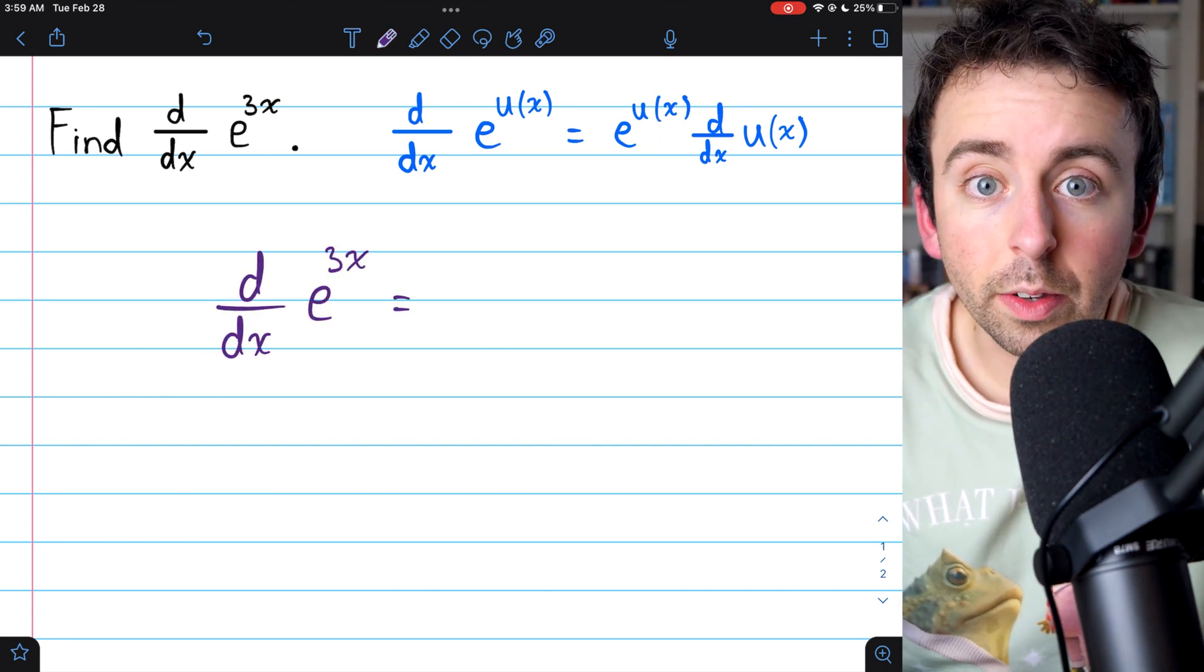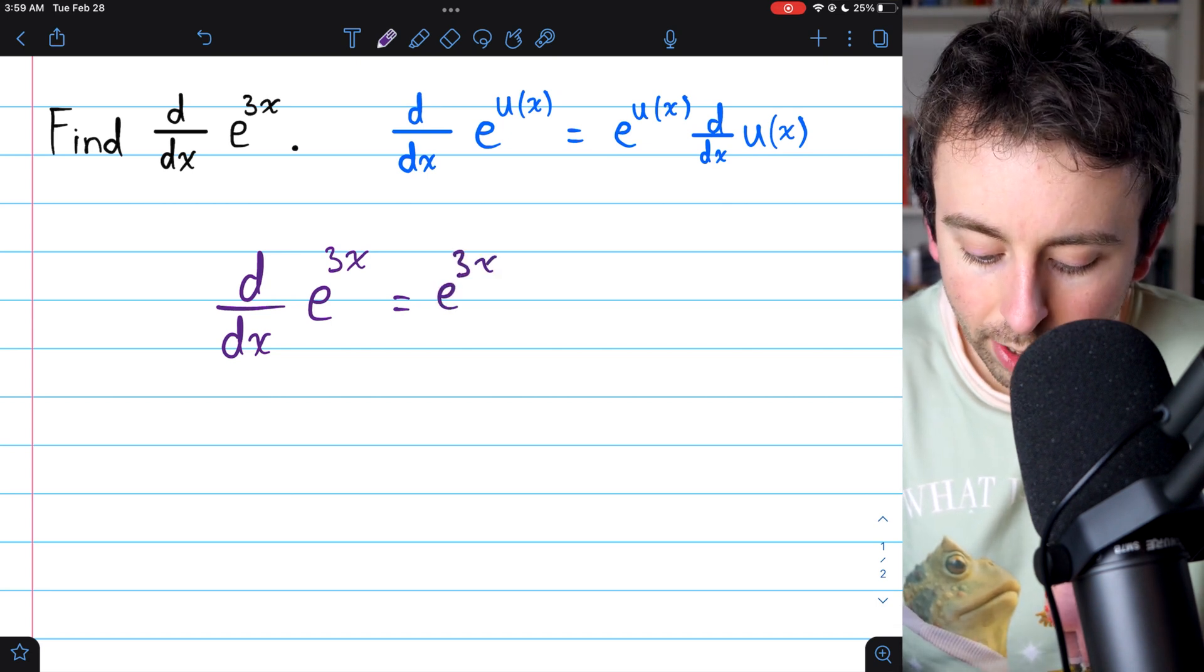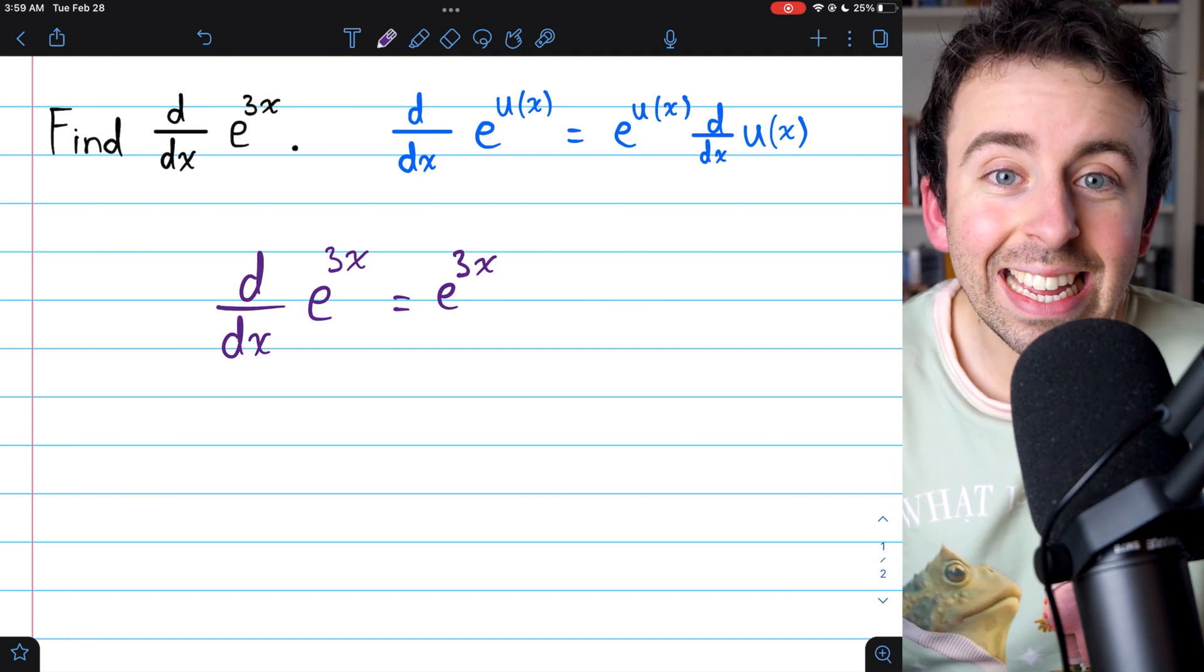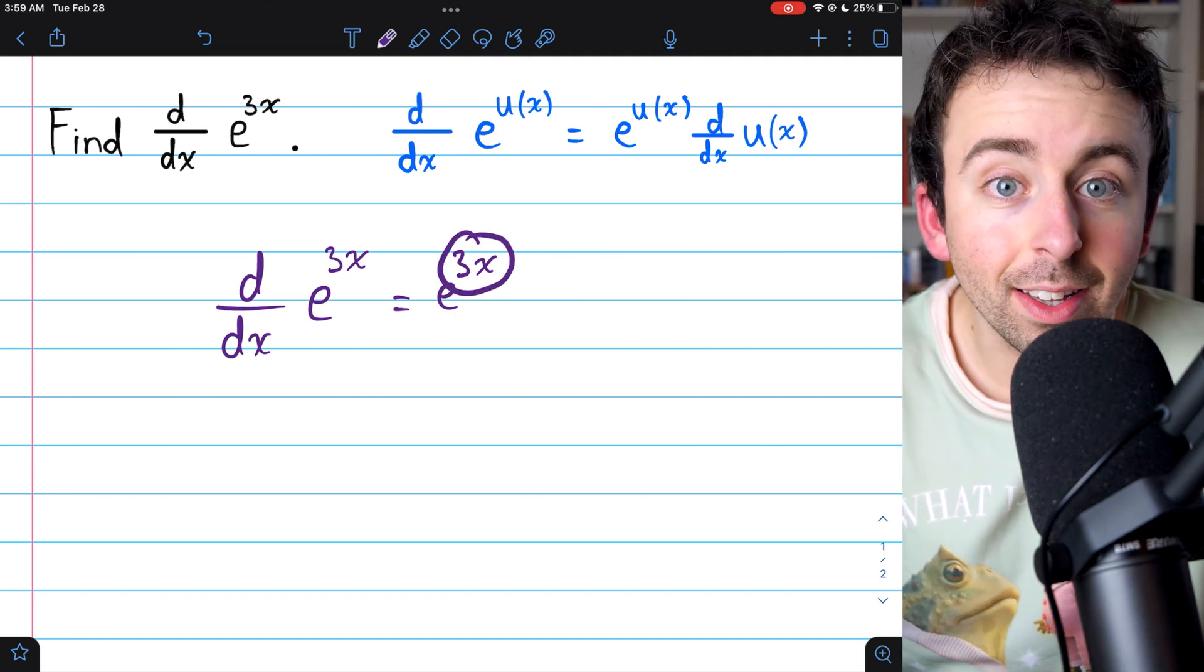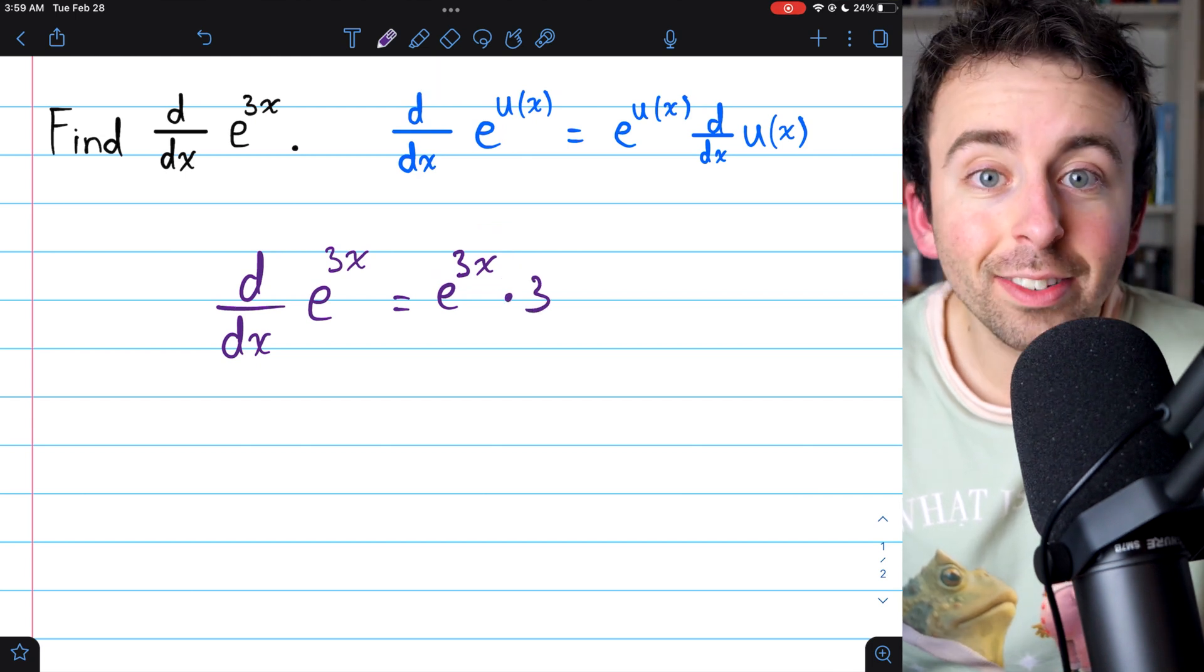So in this case, the derivative of e to the 3x is just e to the 3x. We need to leave that, and then multiply by the derivative of that inside function, the function that's in the exponent. The derivative of that, of course, is just 3.